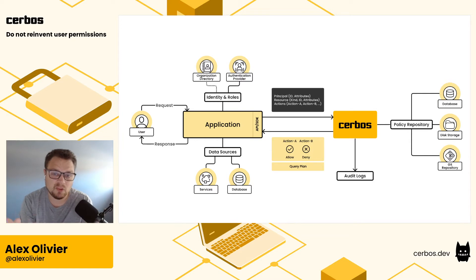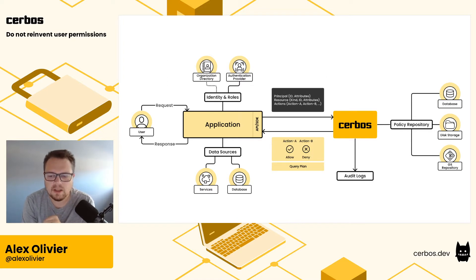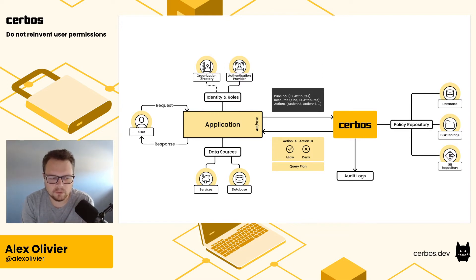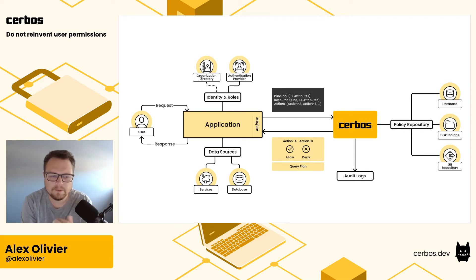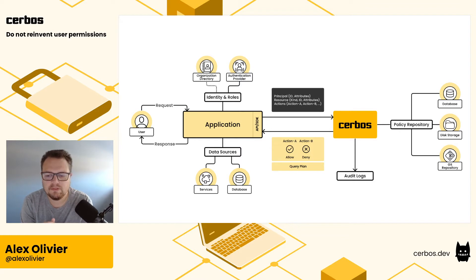Inside the application block you know two things based on the request. One is you know who the user is — they've identified themselves by logging in, they have some sort of credential, probably a session cookie or a JWT token to establish who they are. With that information you can go and look up from your authentication provider, be it Auth0 or Okta or something like that, more profile information about them, and also from your own application or an external directory, information about roles, groups, teams, memberships, and that kind of context.